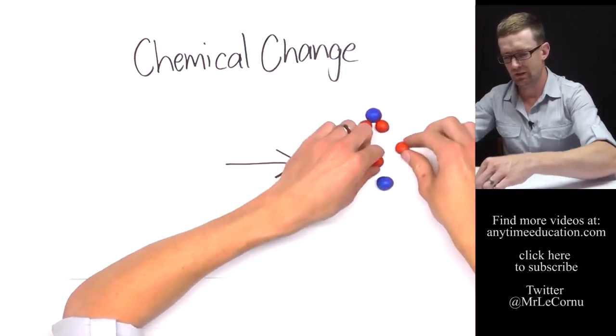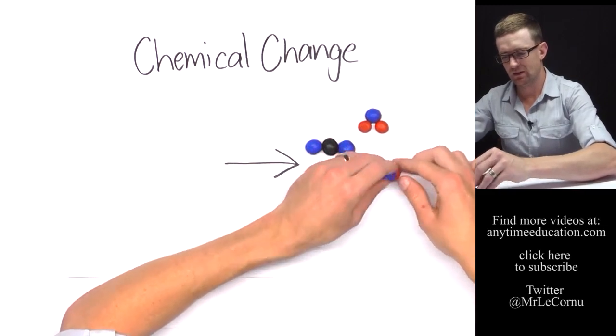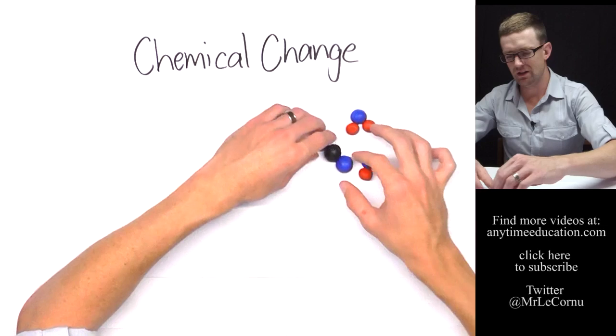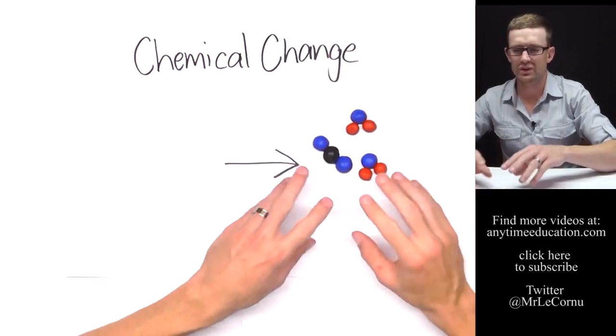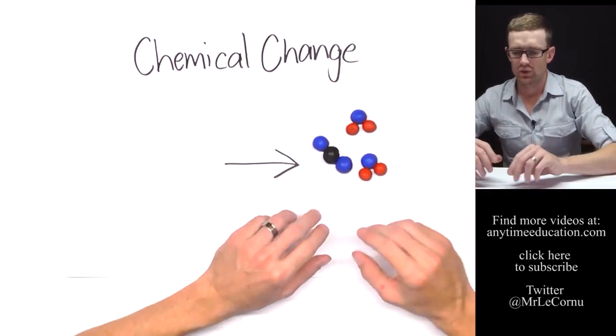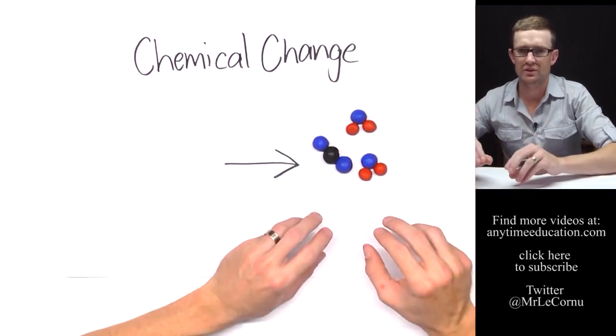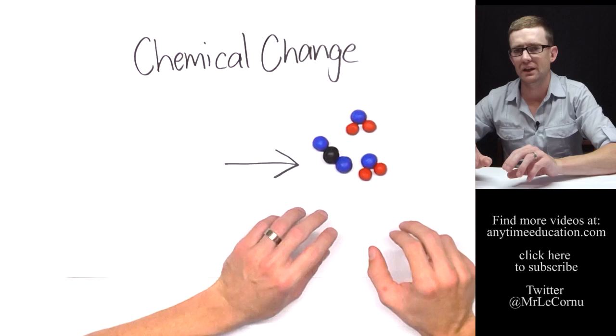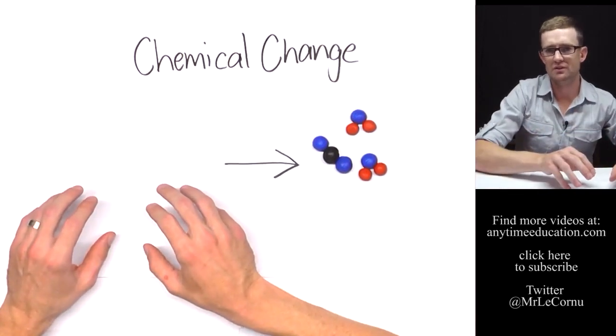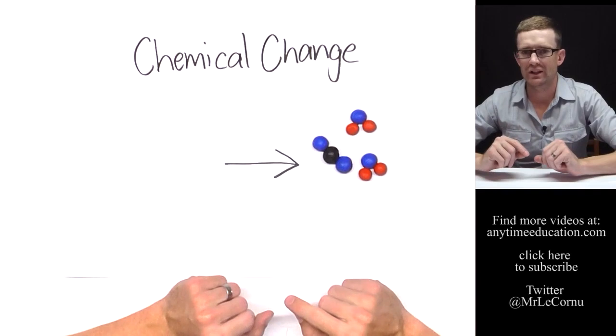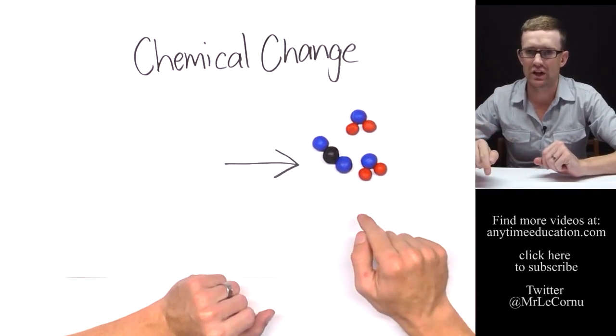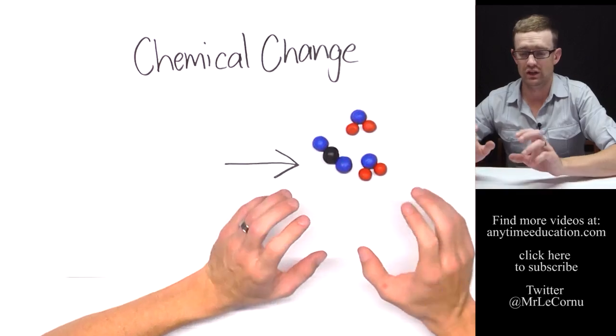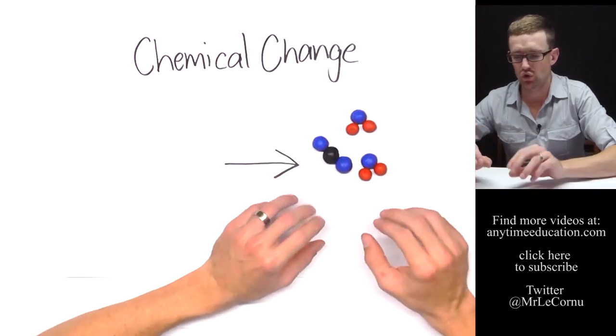So let's go like that and like that. And so now we've actually formed some new molecules, which means we've formed new substances that are going to have totally different properties to the original substances. That is when we classify it as a chemical change. We've rearranged the atoms and formed a new substance with new properties.